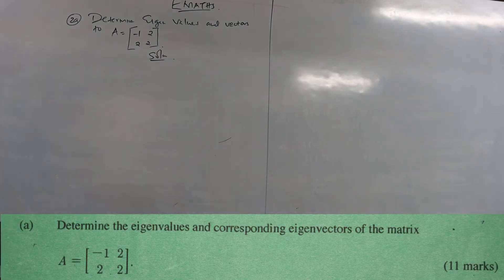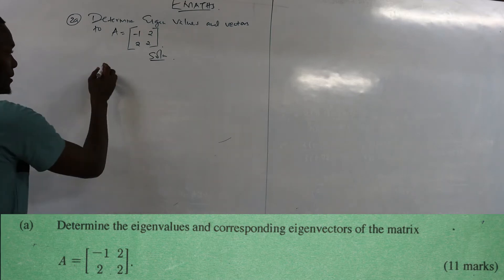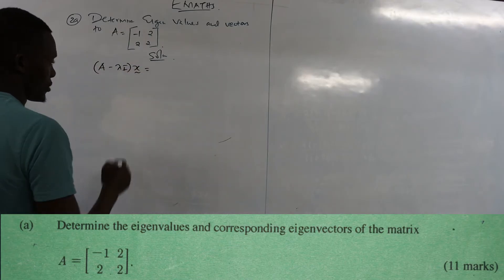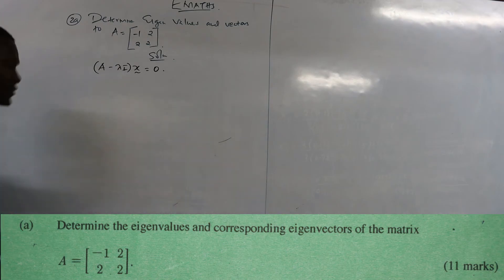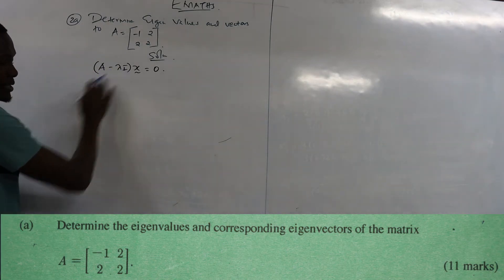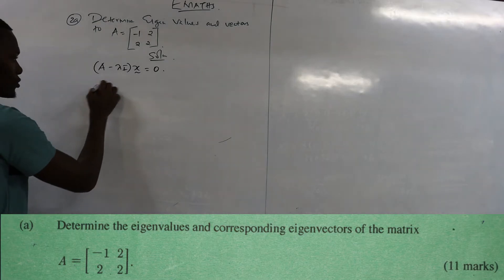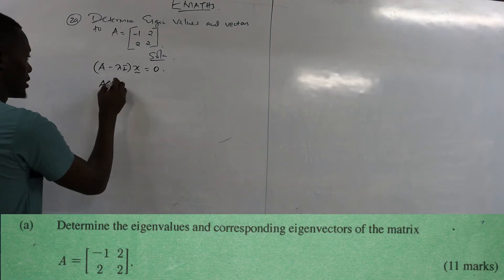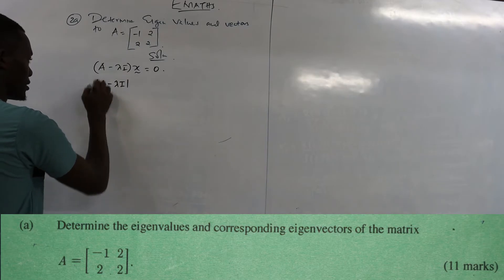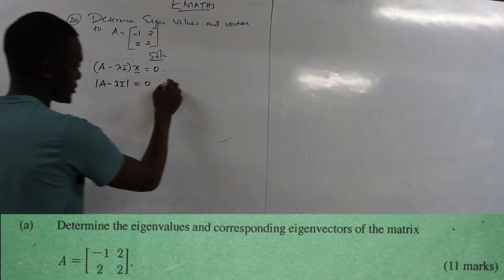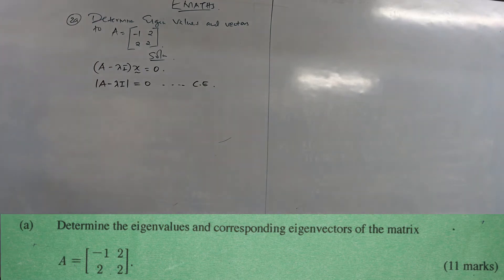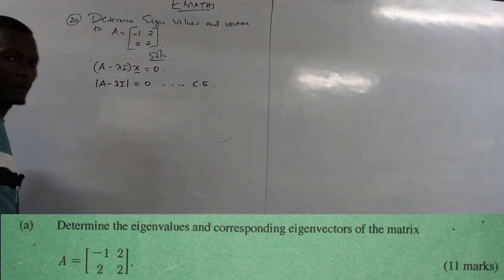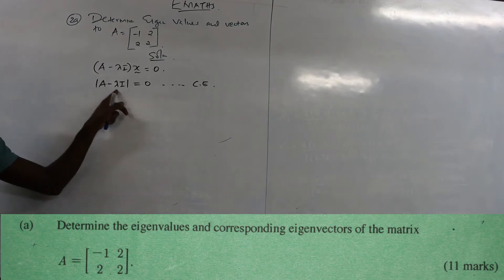To solve, we need to take note of this particular equation: when you take matrix A minus lambda I, then multiply by vector x, that should give you zero. We solve for this part — we call it the characteristic equation, CE. So we know that the determinant of A minus lambda I equals zero. This equation is called the characteristic equation.